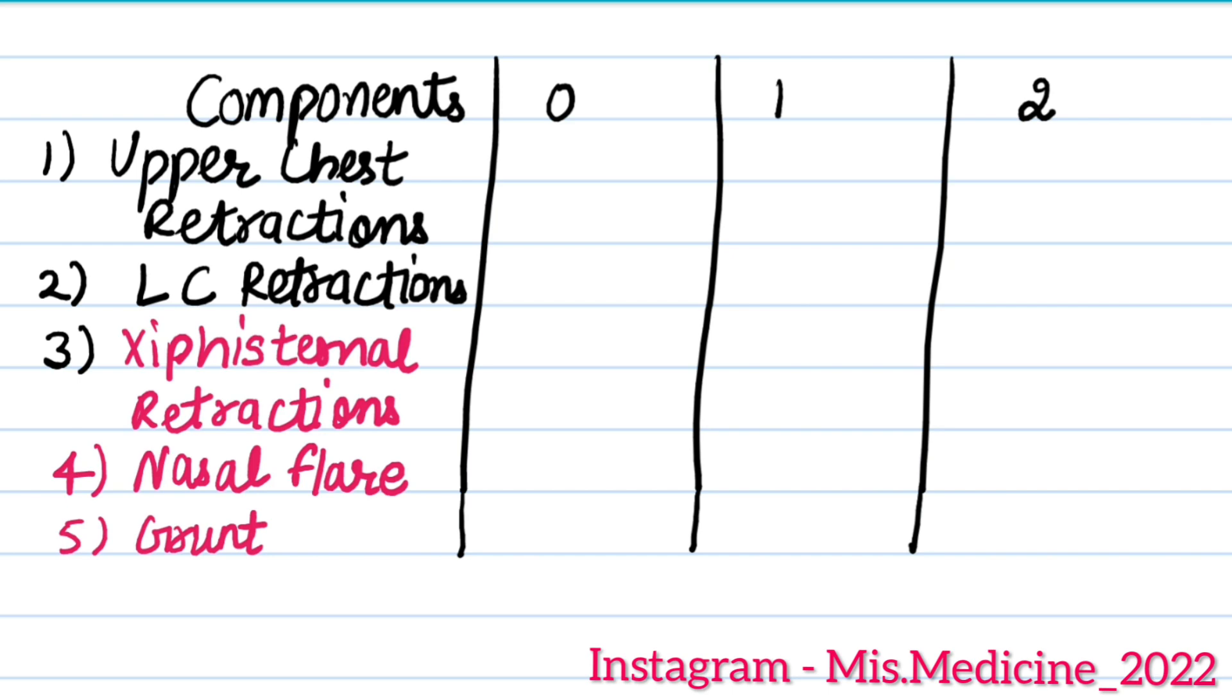So let's start. There are five components: upper chest retractions, lower chest retractions, xiphesternal retractions, nasal flare, and grunting. According to that, we will mark zero, one, and two.